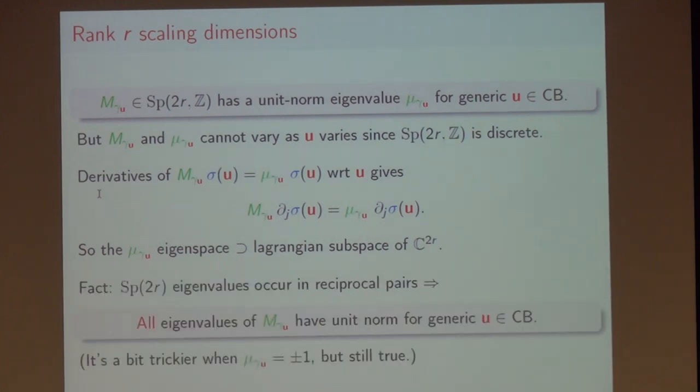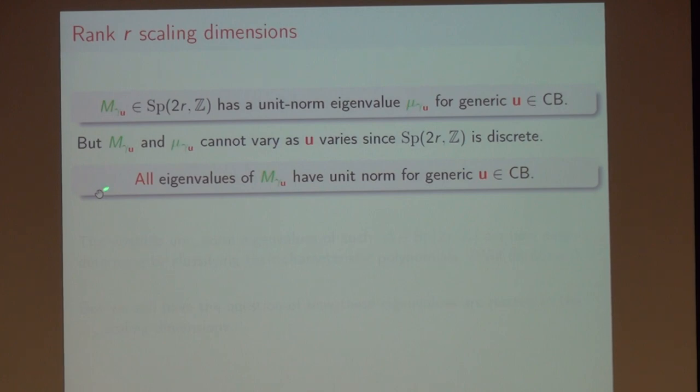This mu eigenspace has to include a Lagrangian subspace. A slightly technical result comes from the fact that a basic result in symplectic linear algebra is that eigenvalues of Sp(2r) indices always occur in reciprocal pairs. Let's say mu is some phase, e^{iθ}. For every, there's at least r of them, and for every one, there's another one, e^{-iθ}. We've learned that all the eigenvalues have unit norm. This is kind of the strongest result, kind of generalization to higher rank of the result that we found in rank one that we hoped for. It's a little trickier because if the eigenvalue is plus or minus one, they're their own reciprocal, and so you have to worry that the argument that I just gave broke down, but the answer still is true. You have to do a little bit more work using some basic facts about symplectic linear algebra.